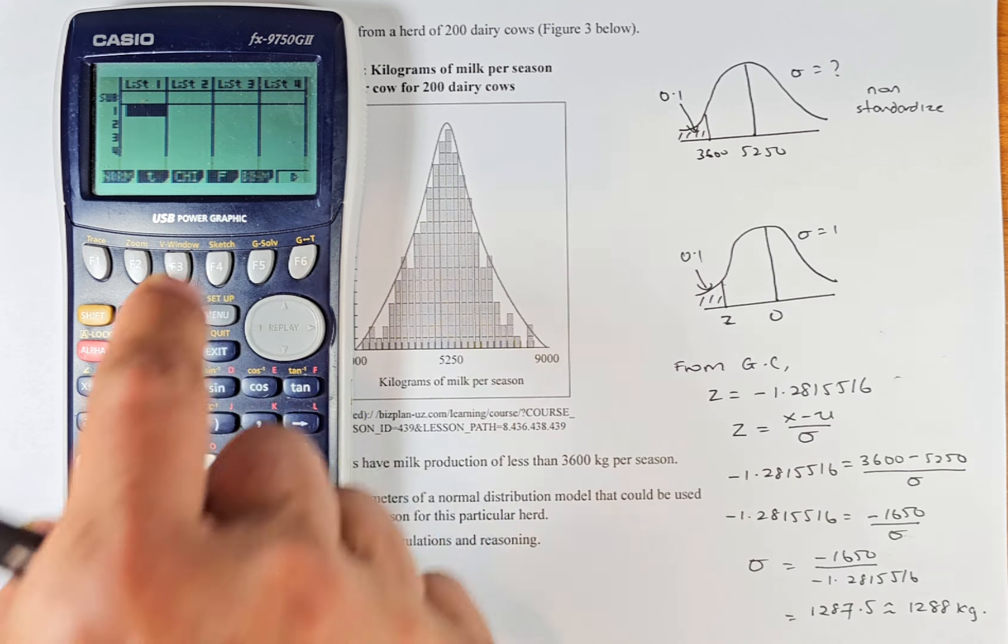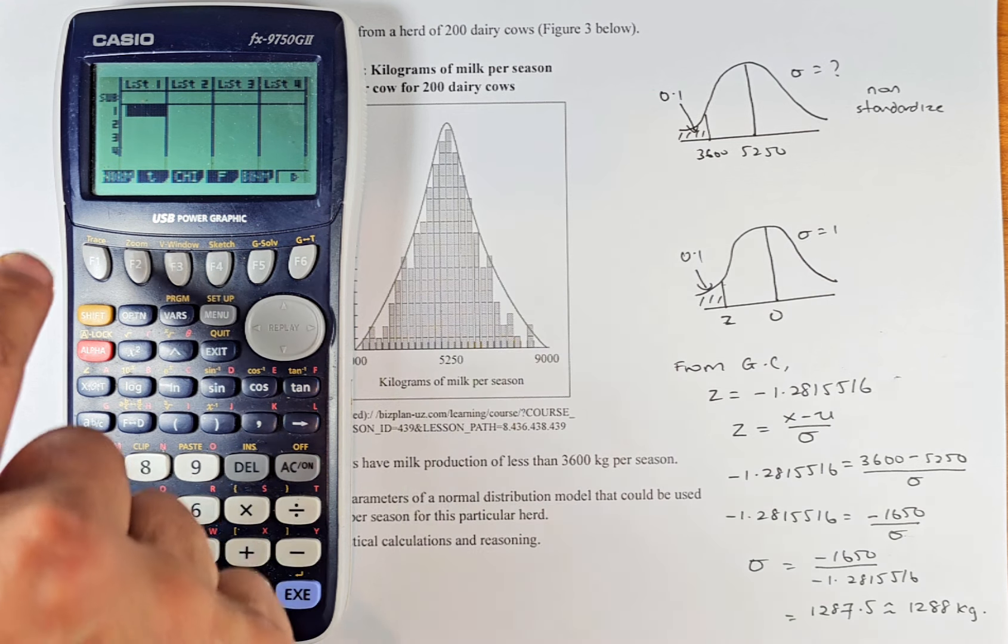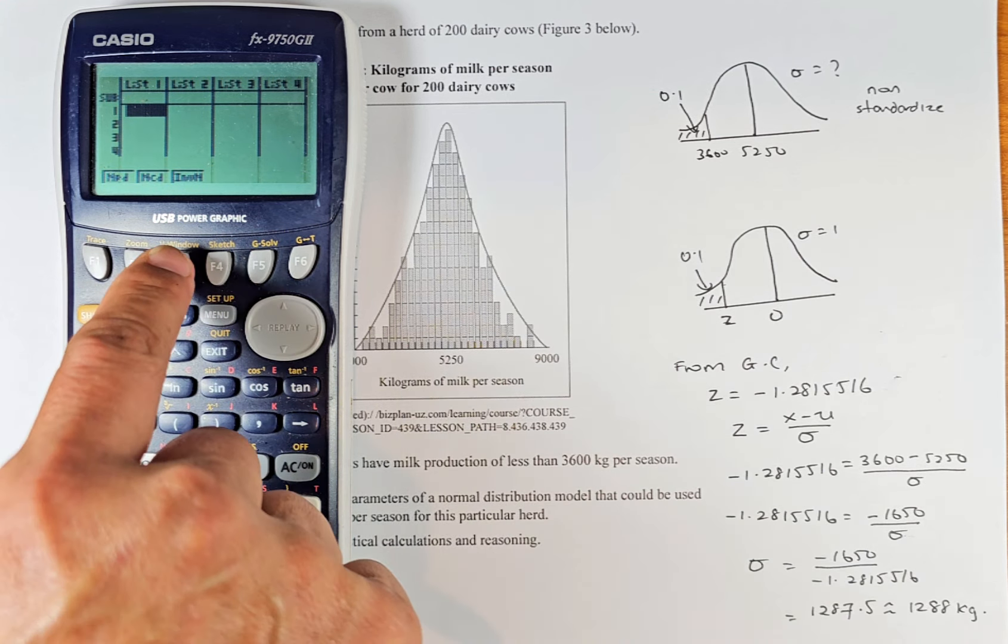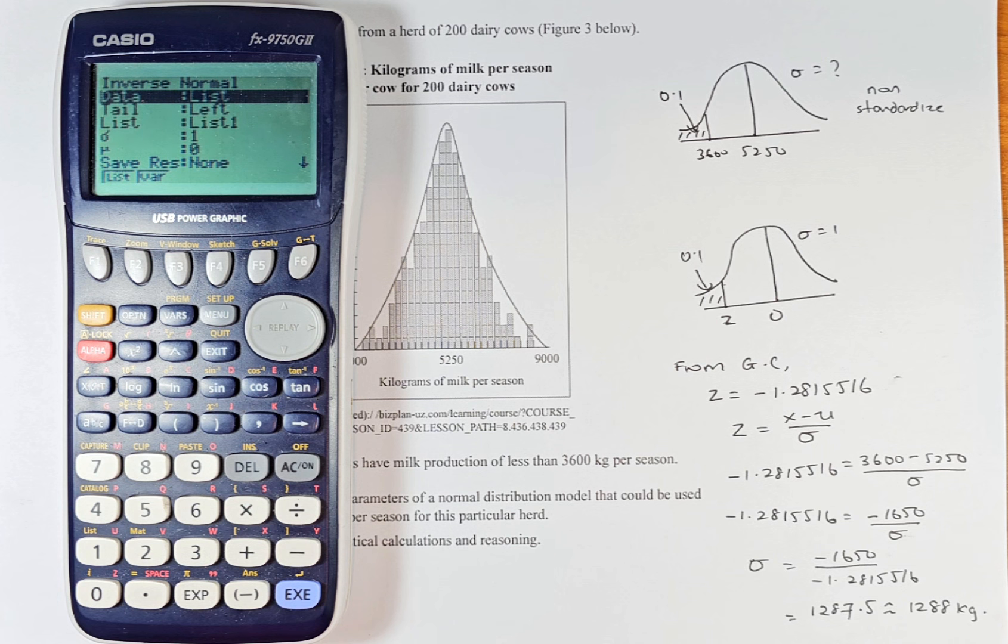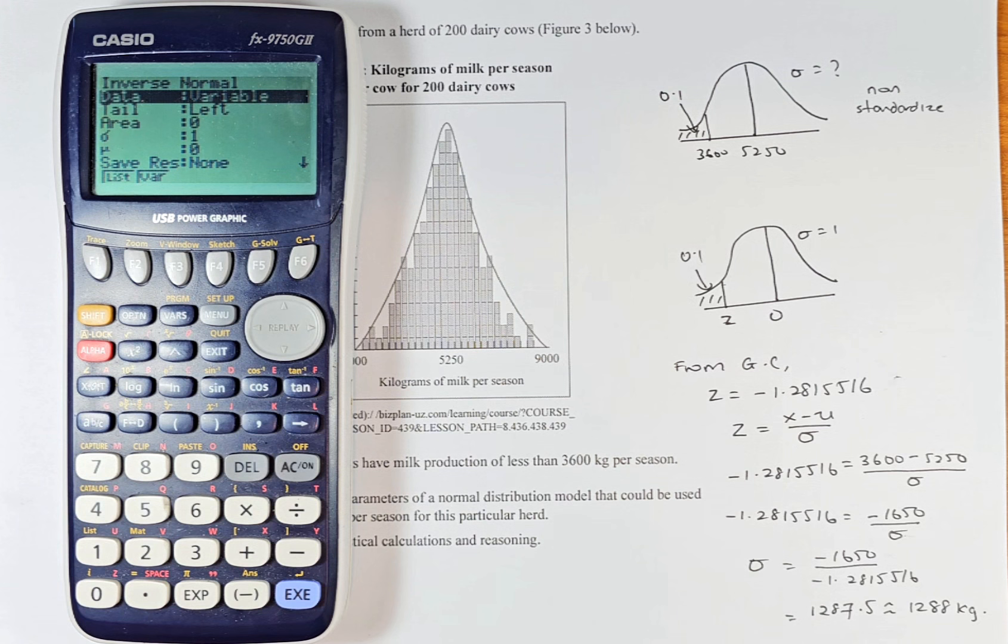Now, again, distribution. And again, I told you before, this time we're going to do inverse normal. So we're going to click on F1 for normal and then F3 for inverse normal. And of course, we need to standardize it first. To standardize it, we need to go to variable. So F2, now we can do it.